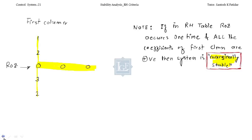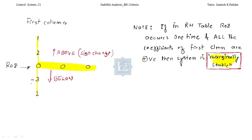Now, instead of this, if you are getting sign changes in the first column, we have two conditions. The sign may change below the ROZ or above the ROZ. The first condition: if you are getting ROZ only one time and no sign change in the first column, then marginally stable.